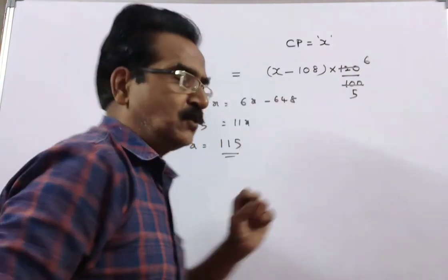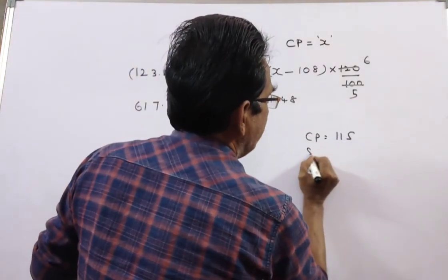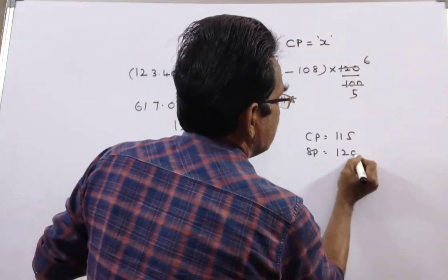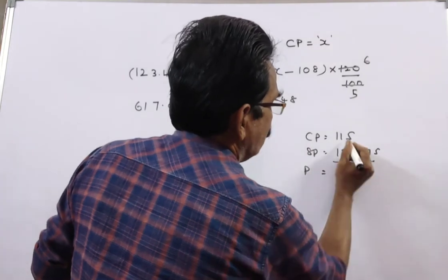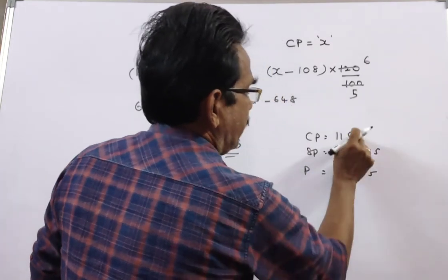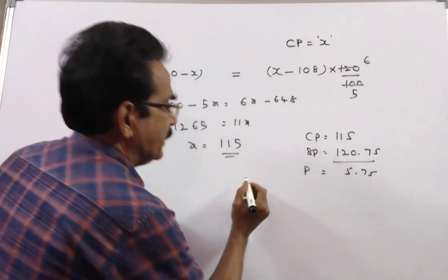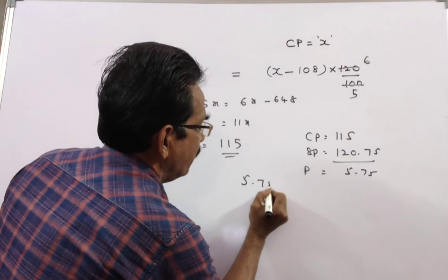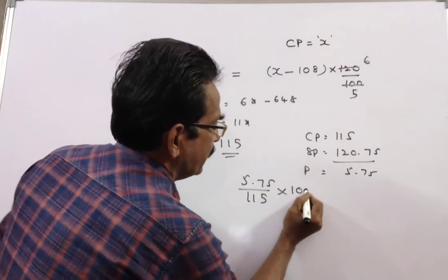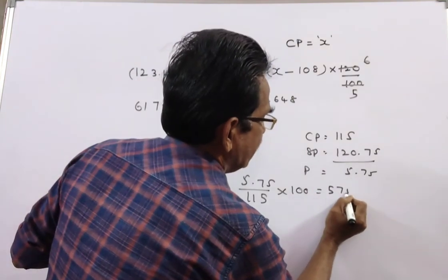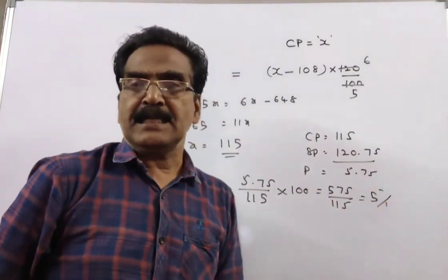The question is: if the cost price is 115 and it is sold at 120.75, what is the profit percent? The profit is sold price minus cost price, which equals 5.75. Profit percent is profit divided by cost price, into 100 — that is 5.75 by 115 into 100 — which equals 5%. That is your answer.